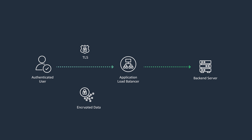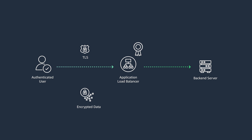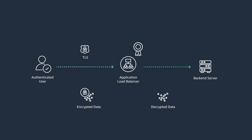With ALB, you can offload the SSL termination at the ALB layer. The load balancer uses a server certificate to terminate the front-end connection and then decrypt the requests from the client before sending them to the targets, thereby offloading the implementation logic of SSL validation from your applications to an ALB. ALBs also support mTLS, thereby authenticating both the clients and the server at the ALB layer.